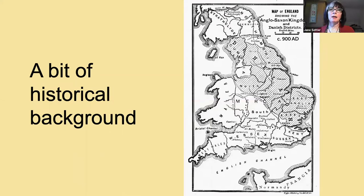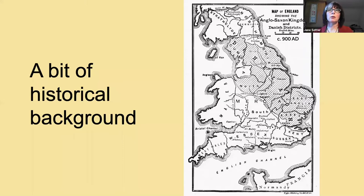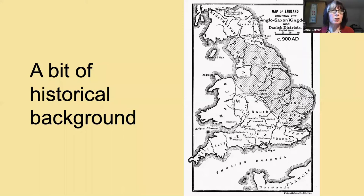The shaded area is the Danelaw — that's where we have the invaders from Denmark and the Viking invaders who settled later. However, in the southwest area the Anglo-Saxons would have pronounced the R sound. So we have this situation from around 900 AD.